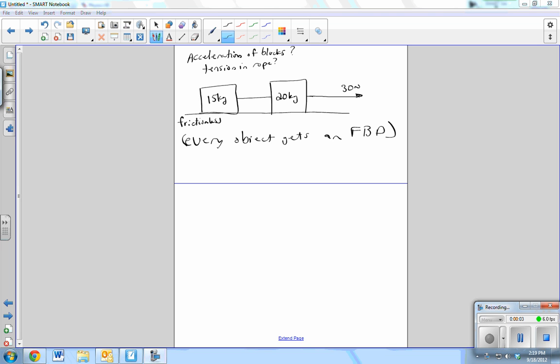All right, good. So we've got an acceleration of blocks and the tension of the rope. It's a frictionless surface.